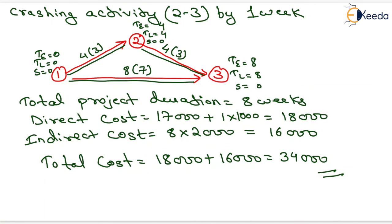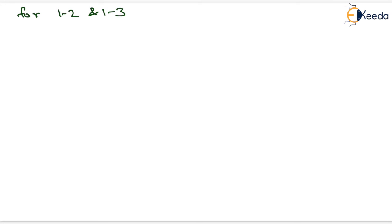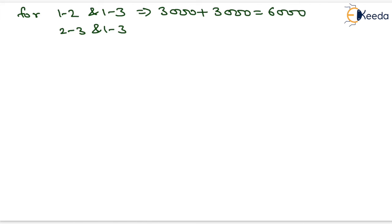If we crash activity 2–3 by another 1 week, the critical path will change. We have two options: crash activities 1–2 and 1–3 by 1 week each, or crash activities 2–3 and 1–3 by 1 week each. Cost slope for the first combination is 3000 plus 3000 equals 6000 rupees. Cost slope for the second combination is 1000 plus 3000 equals 4000 rupees. The minimum is 4000, so we choose to crash activities 2–3 and 1–3.